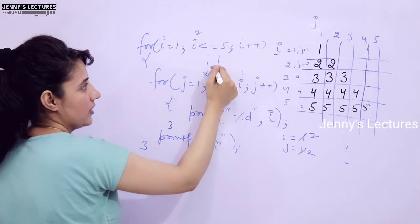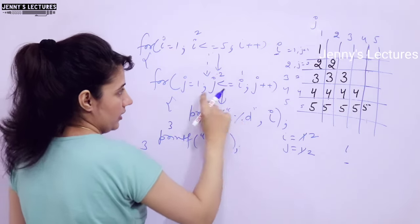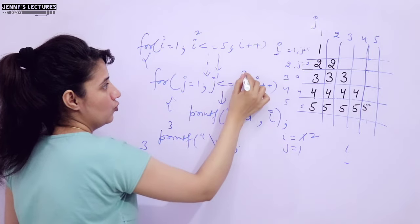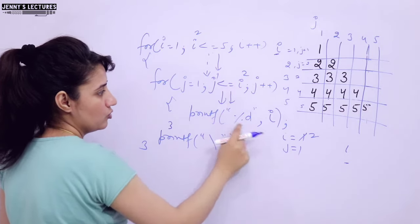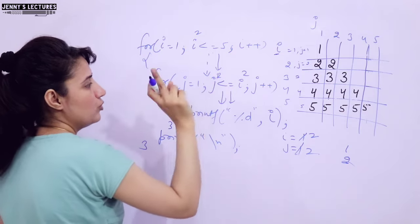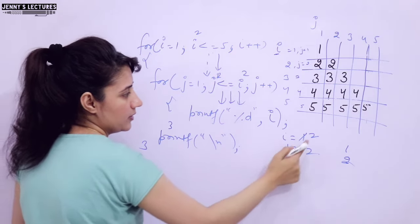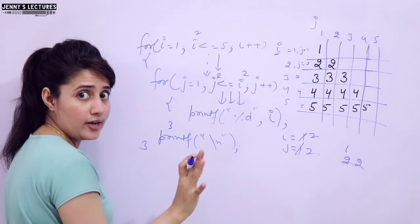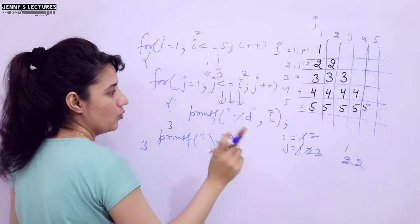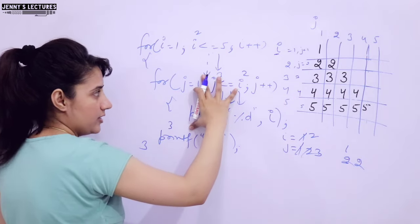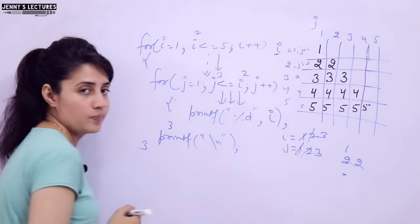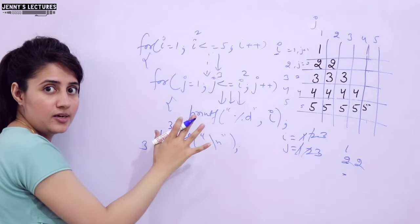Is 2 less than equal to 5? Yes, we enter again. j equals 1 again. j is 1, i value is 2 — 1 less than equal to 2, condition true. We enter the loop, i value 2 is printed. j plus plus. 2 less than equal to 2, condition true — enter again, i is still 2, so 2 is printed again. j plus plus, j is 3. Is 3 less than equal to 2? No — exit from the inner loop. Slash n, cursor goes to the next line. i plus plus, i becomes 3. Now I think you can easily understand the working.